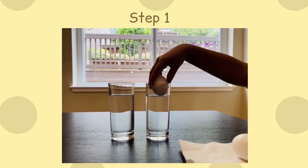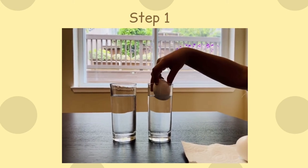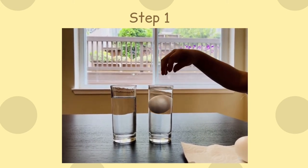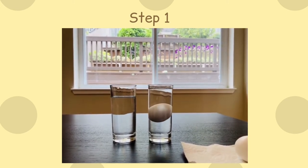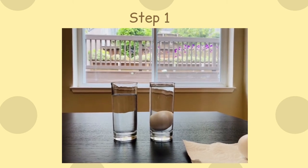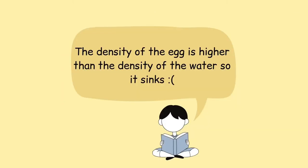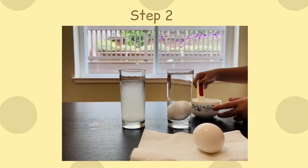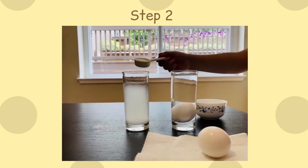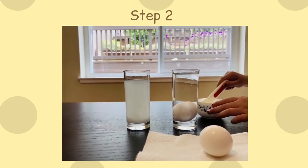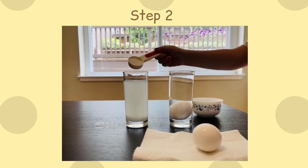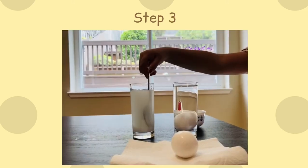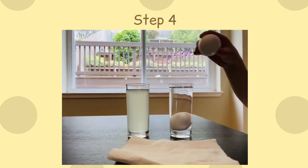First, carefully put one egg into one of the glasses of water. Oh no, it sank! The egg sinks when you put it into a glass of water because the density of the egg is higher than the density of the water. That's okay, I have an idea! Put 3 tablespoons of salt into the other glass of water. Stir the solution until the salt is dissolved. Now, gently put the other egg into the water. It floats!